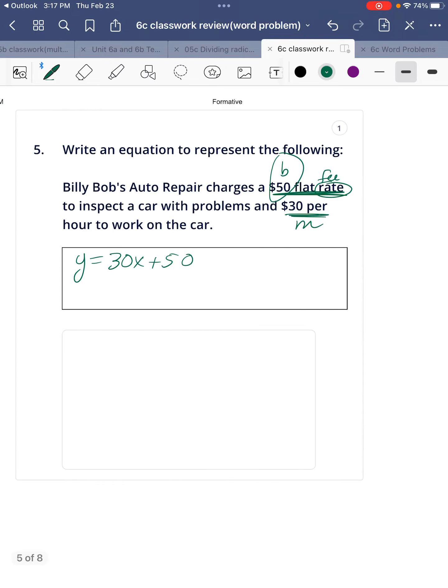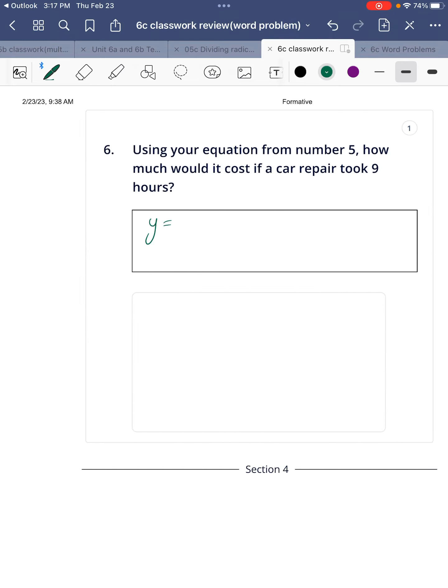How much would it cost if it took 9 hours? So it would be $30 per hour, so this is hours, the x. So that's going to be y equals 30 times the 9 plus our initial fee of $50. So that's $270 plus 50, and that's going to be $320.